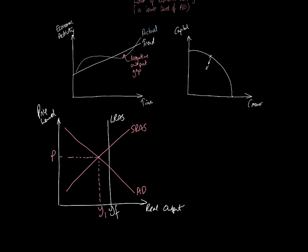A classical economist doesn't believe this situation can persist into the long run. What would happen is that wages would fall, bringing employment back towards YF. Therefore, a classical economist believes that demand-deficient cyclical unemployment can only occur in the short run.